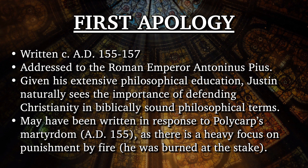Justin Martyr writes this particular work sometime between about 155 to 157 AD. It's addressed specifically to the Roman emperor at the time, Antoninus Pius, who was emperor prior to the rise of Marcus Aurelius - the famous Roman emperor during roughly 160 to 180 AD. Its given context is really to do with Justin Martyr's extensive philosophical background. Due to his philosophical education through the Pythagorean, Stoic, and Platonic schools - where he eventually lands before his conversion to Christ - he naturally sees the need to provide a valid, philosophically consistent defense from the scriptures and from God-given reason for the Christian faith.